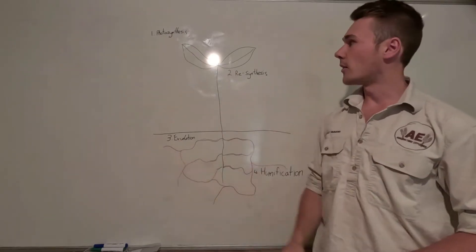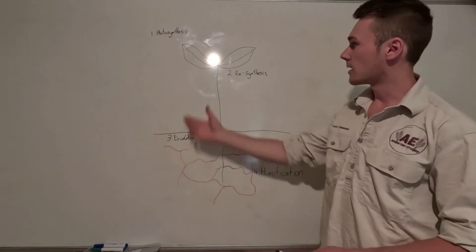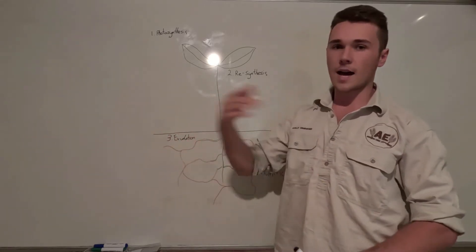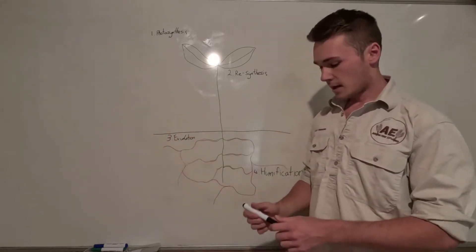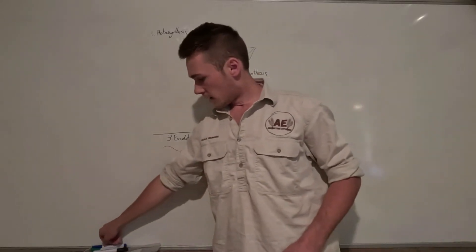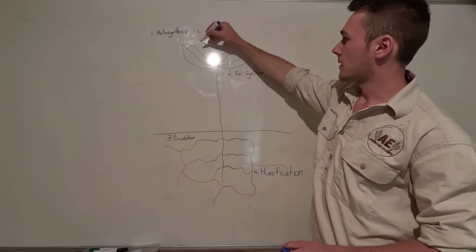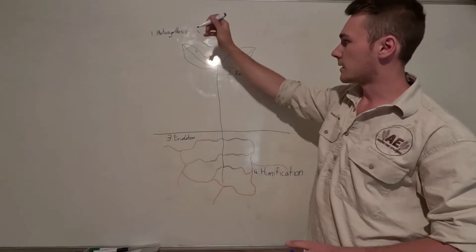It starts off with photosynthesis. If you don't know what that is I've made another video on that, so check it out. Essentially the leaves or plants are making their own food from carbon in the atmosphere and water. There's carbon in the atmosphere that's going to be fixed in our leaves as sugar.